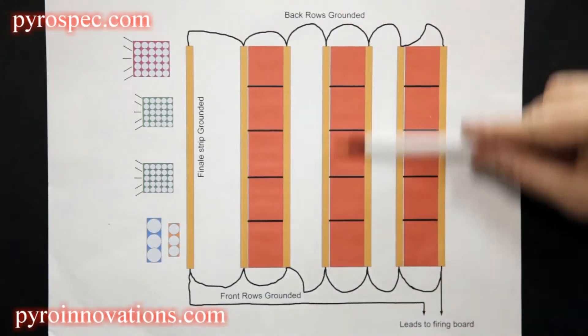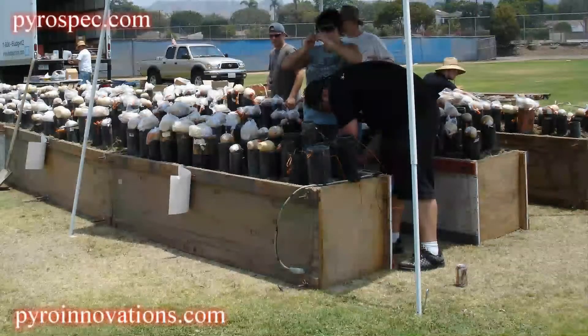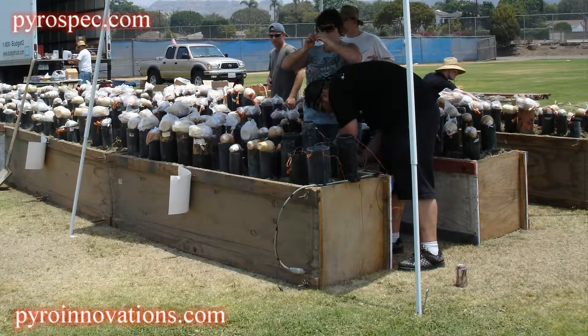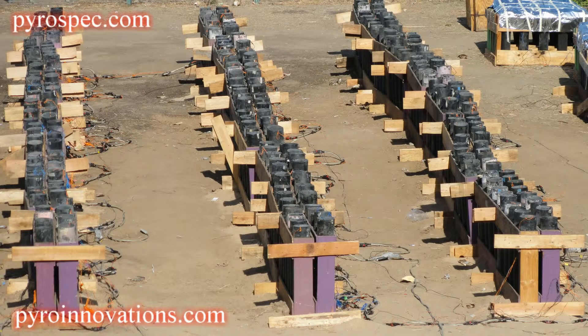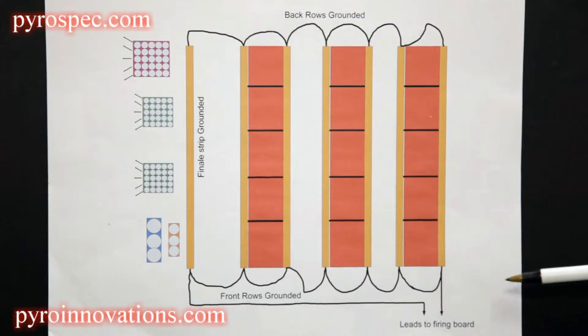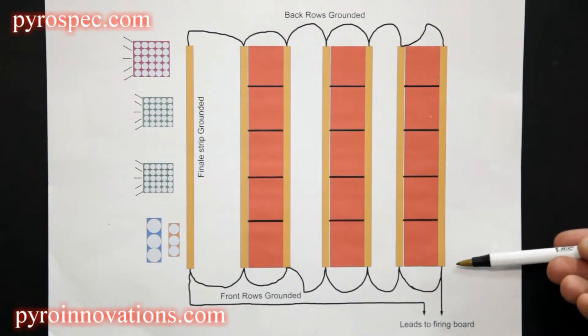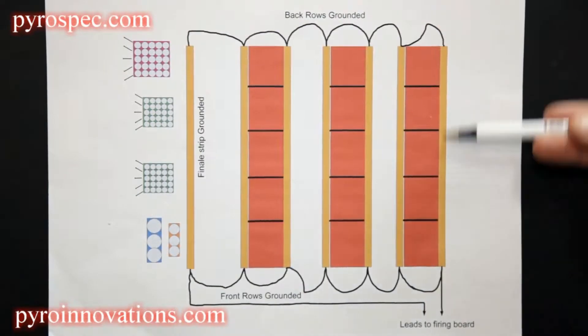The orange part in the middle represents the fireworks—that could be a mortar box, it could be racks, it really doesn't matter. The electrical setup would be the same. There's a ground terminal on both the front and the rear of every strip or field module.